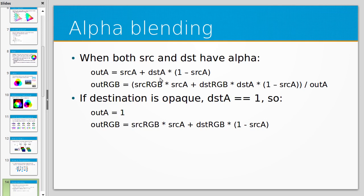Looking at a simple case: if the destination is completely opaque — so you're drawing something partially transparent over an opaque destination — you can set the destination alpha to 1. The equations reduce to a weighted average between the source alpha and the destination times 1 minus the source alpha. If the source is completely opaque, the source alpha is 1, and you end up ignoring the destination pixels and completely overwriting them.